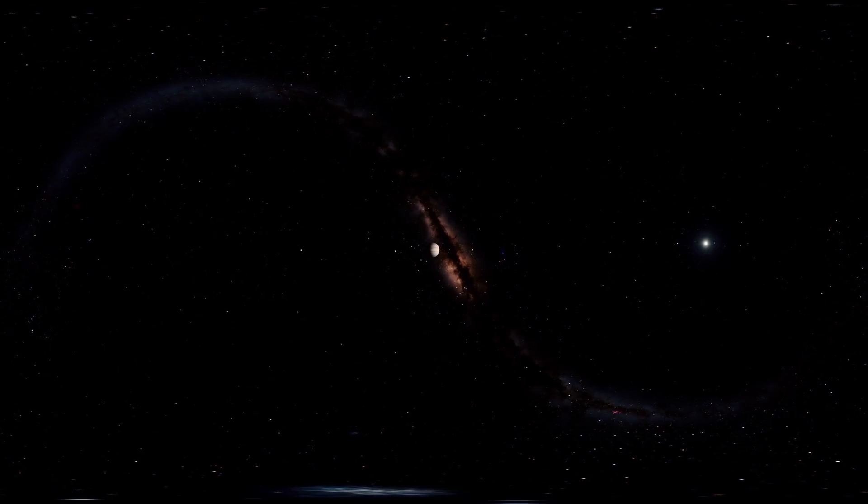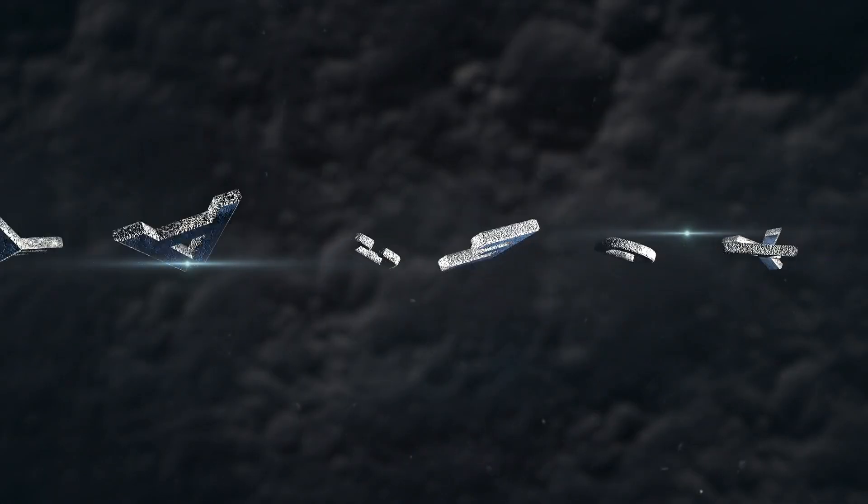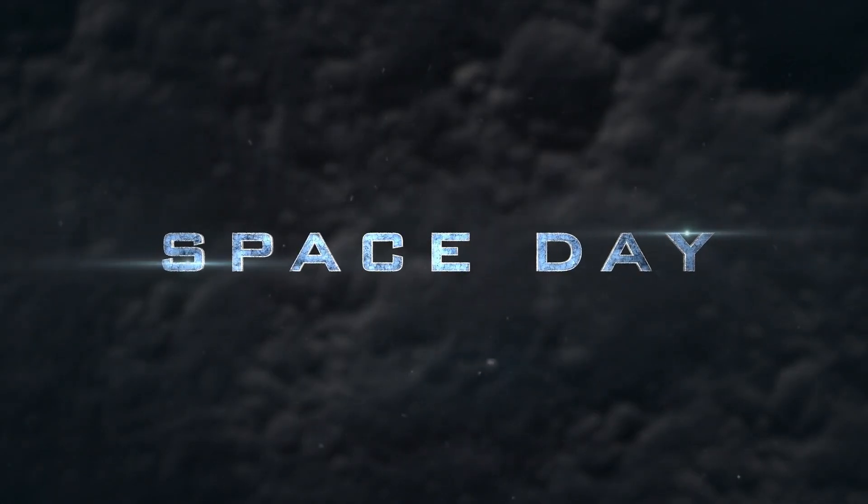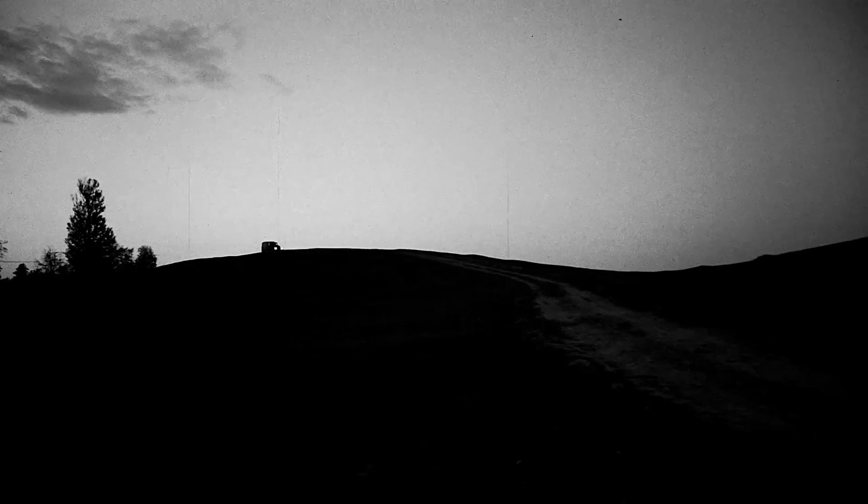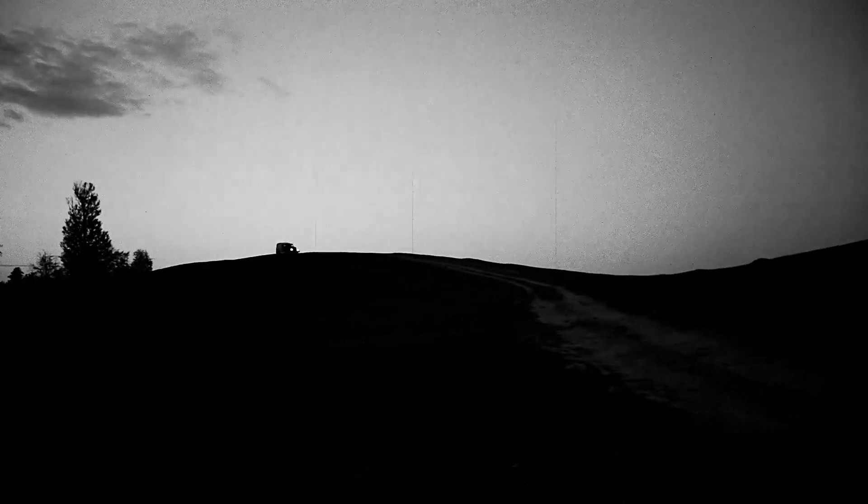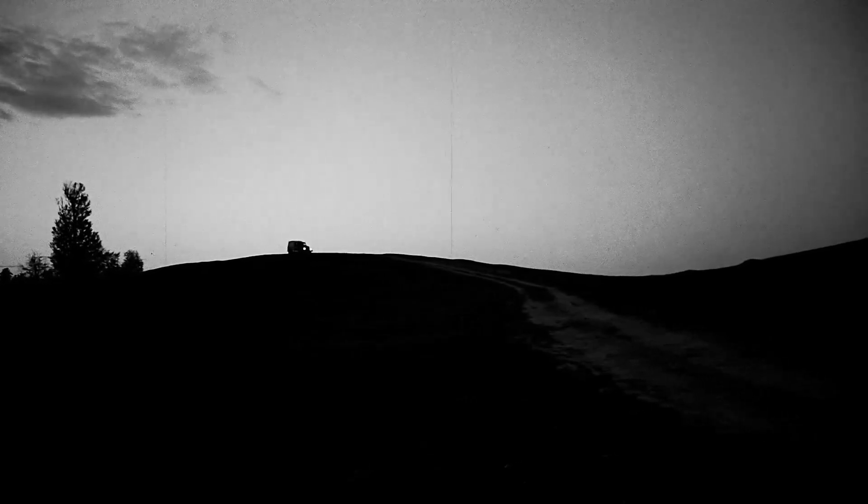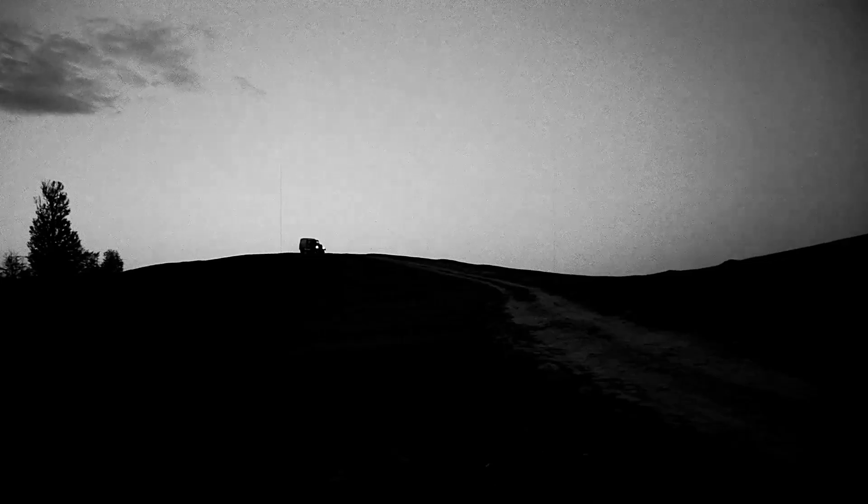These stars are small, dim, and burn their fuel very slowly. That slow burn means they can keep shining for billions and even trillions of years. That's important, because if a planet is orbiting one, it has a long time to just be there, which is good if you're hoping life might develop.